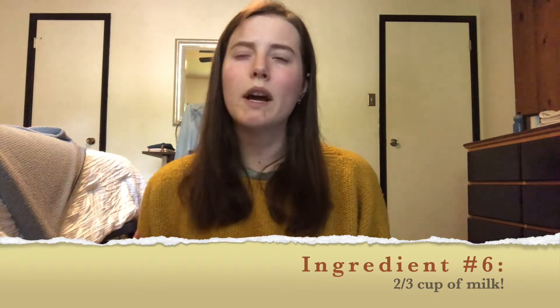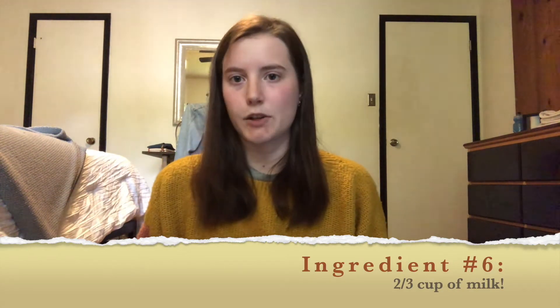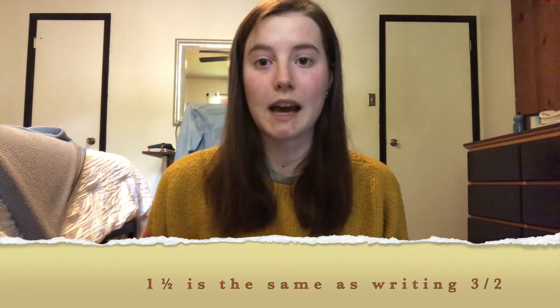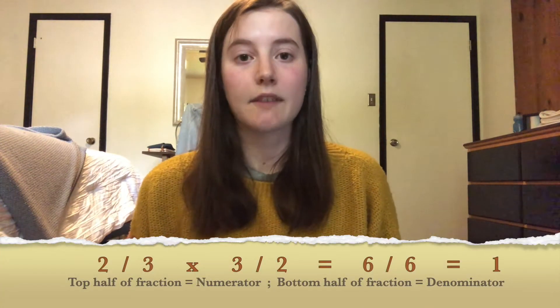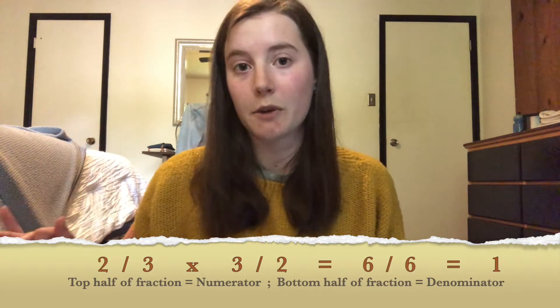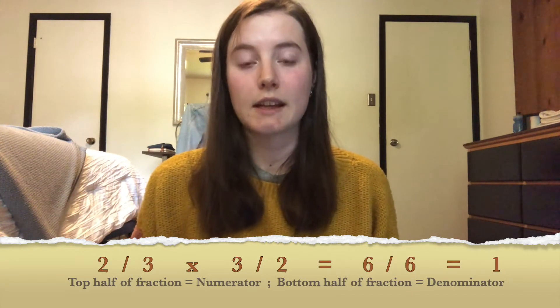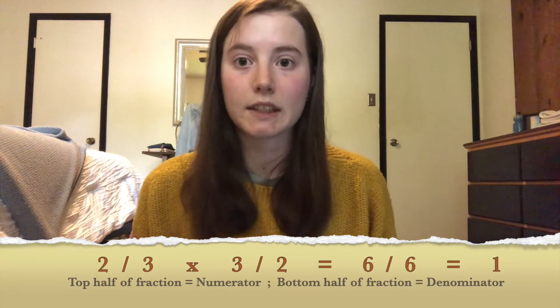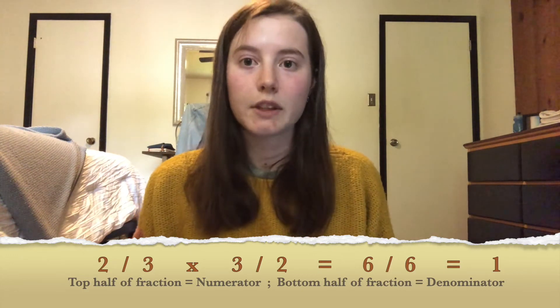We have two more ingredients to go. Next we have two thirds cup of milk. What is half of two thirds? That's actually pretty tricky to do in your head, so I'm going to introduce another way to multiply fractions. If we have two thirds and we want to multiply it by one and a half — well, one and a half is actually the same as writing three halves. So we have two thirds times three halves. To multiply fractions, you just multiply across the top, which is the numerator, and multiply across the bottom, which is the denominator. Two times three is six, and three times two is also six. Six divided by six is one, so this is actually just one.